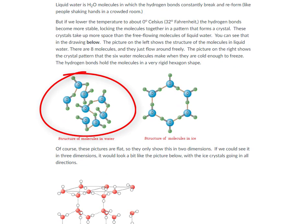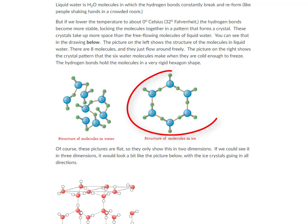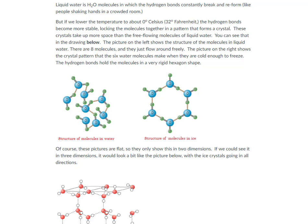The picture on the left shows the structure of the molecules in liquid water — there are eight molecules, and they just flow around freely. The picture on the right shows the crystal pattern that the six water molecules make when they're cold enough to freeze. The hydrogen bonds hold the molecules in a very rigid hexagon shape.